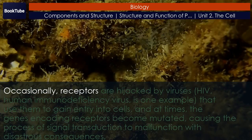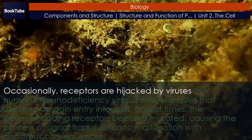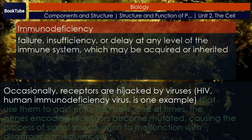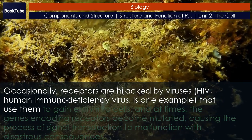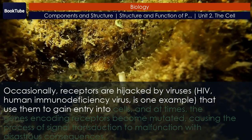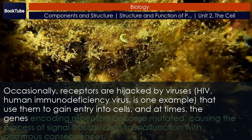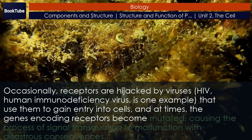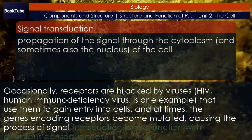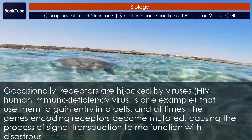Occasionally, receptors are hijacked by viruses. HIV, human immunodeficiency virus, is one example that uses them to gain entry into cells, and at times, the genes encoding receptors become mutated, causing the process of signal transduction to malfunction with disastrous consequences.